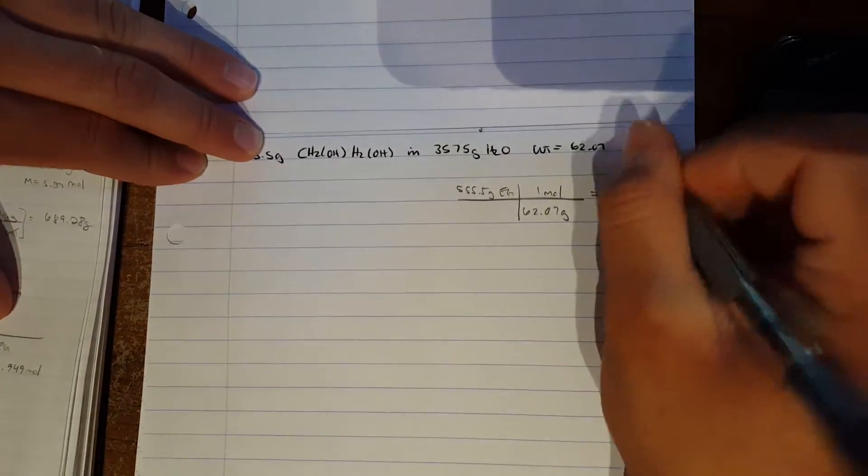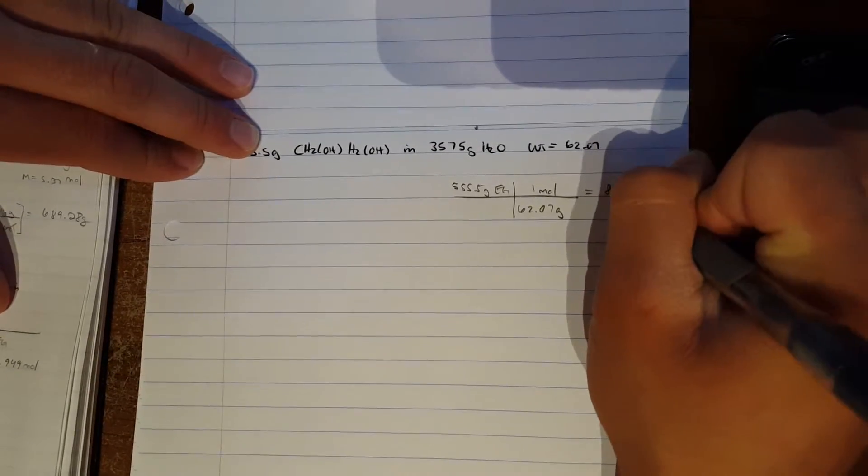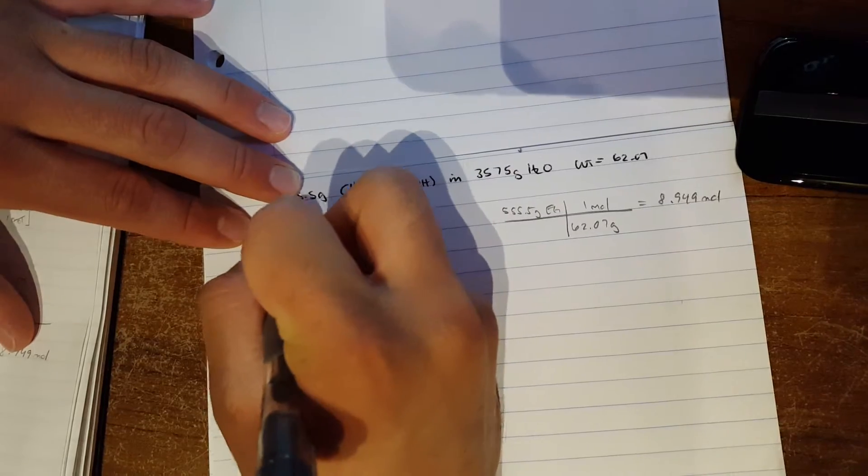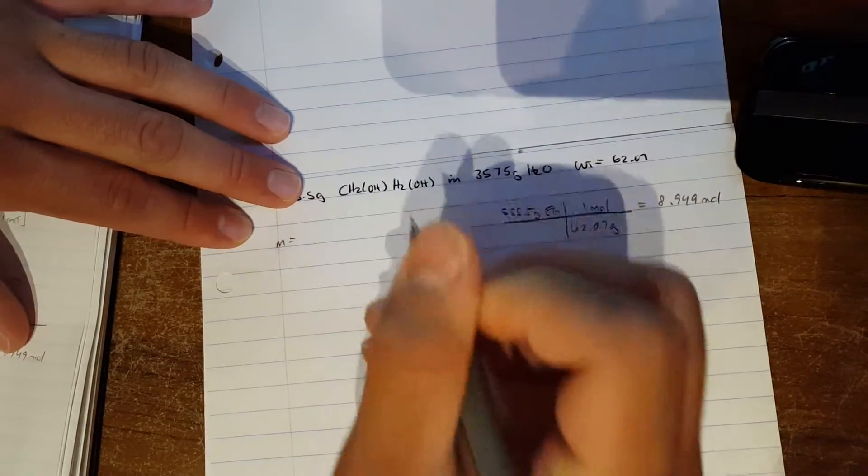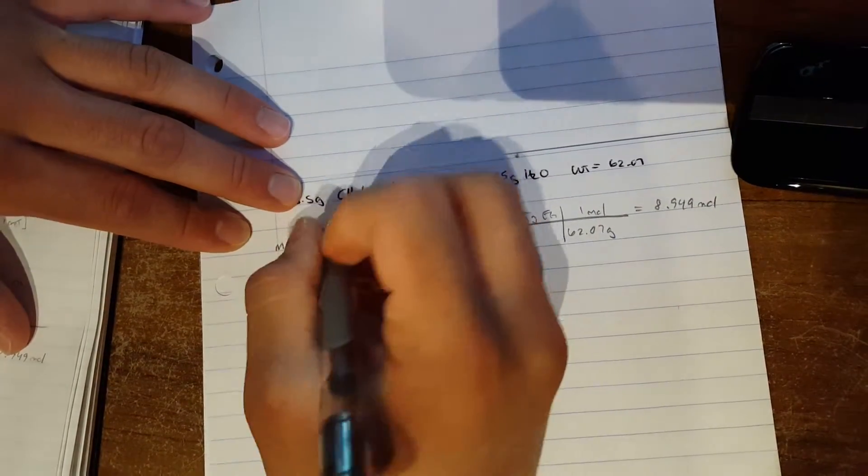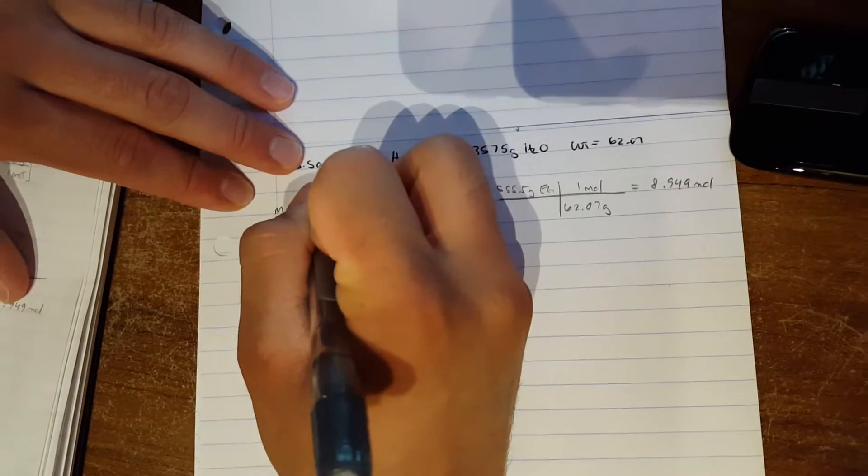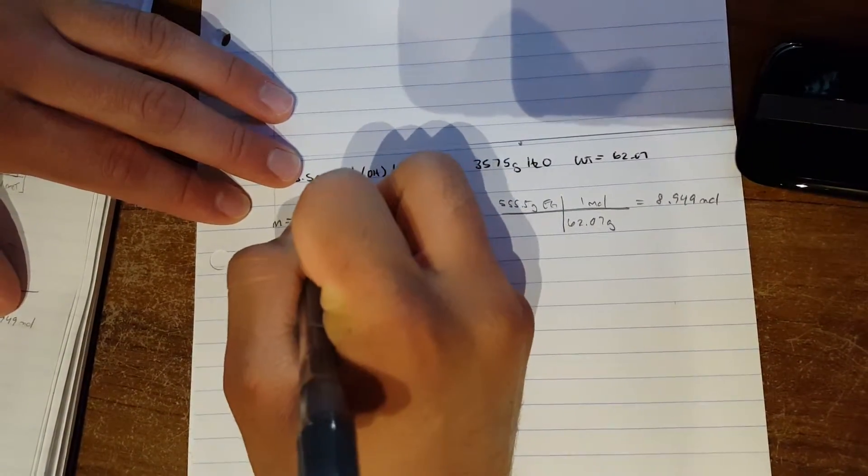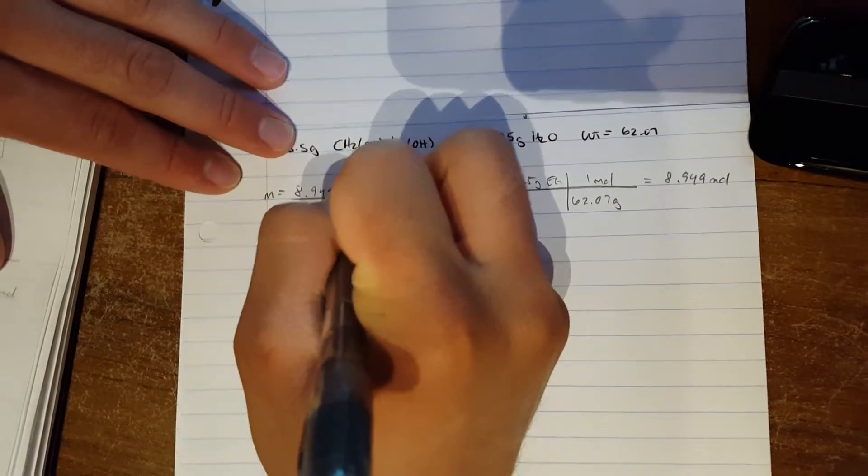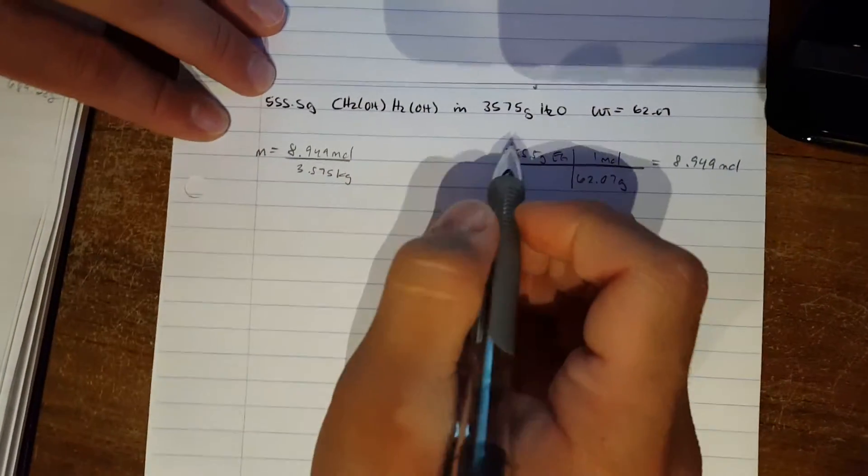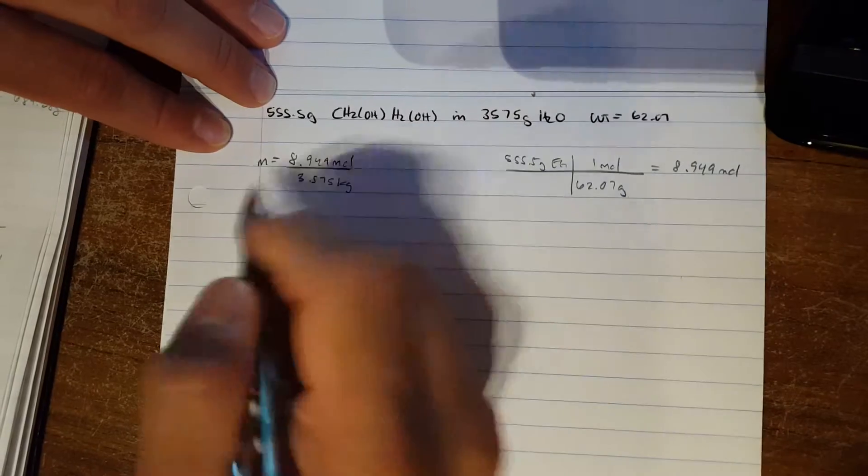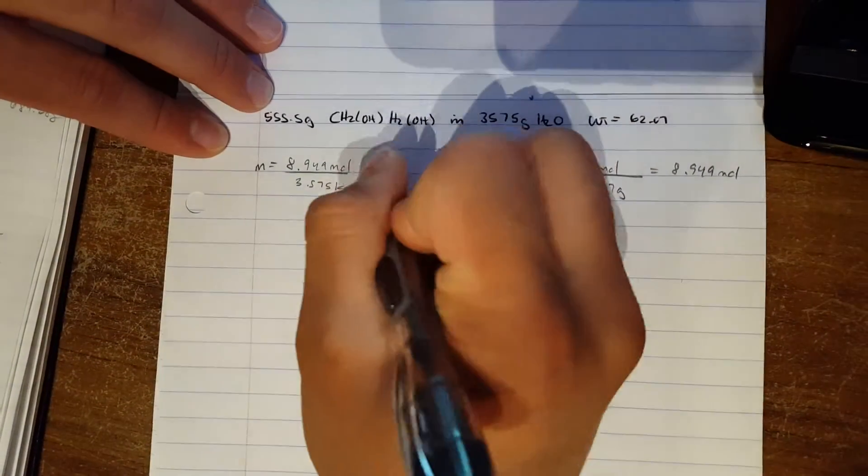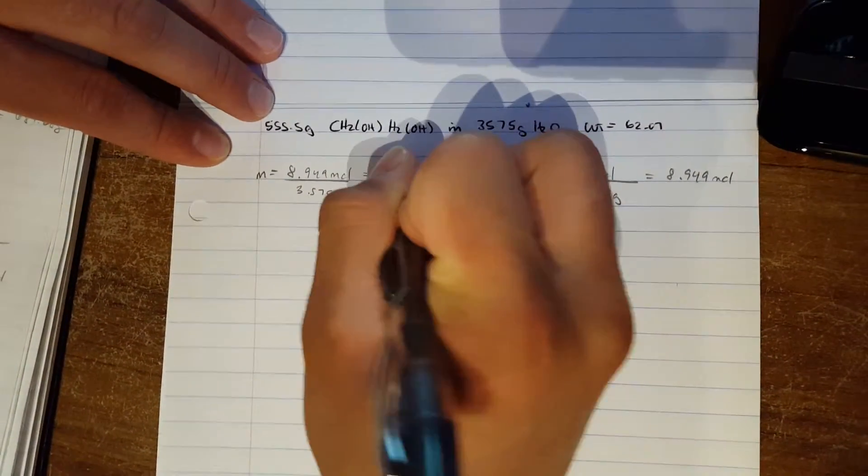Which comes out to 8.949. We plug this into our molality formula, which is moles over kilograms of solvent, which is given to us right here. And the moles we solved for, so this gives us 2.503.